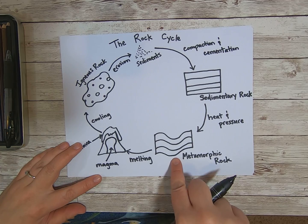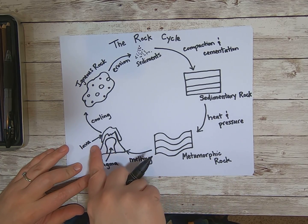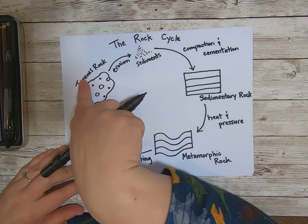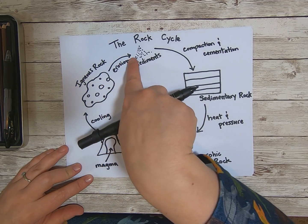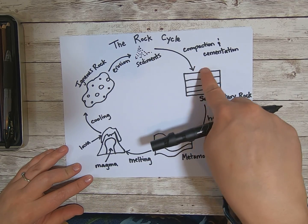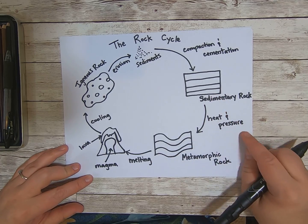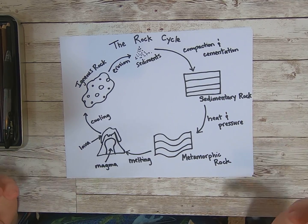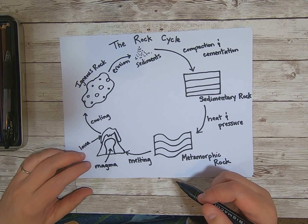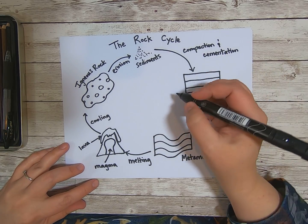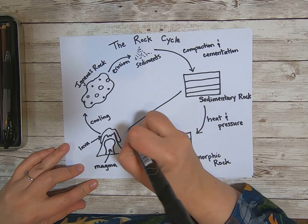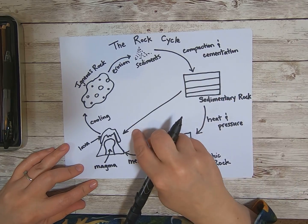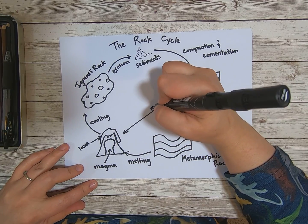Here's my rock cycle. Sedimentary rock, it goes through heat and pressure, it becomes metamorphic. It goes through melting, it becomes magma and lava. It cools down, it becomes an igneous rock. It goes through erosion, it becomes sediment, and compacts and cementation back into a sedimentary rock. Now I have a couple more arrows to add, because my sedimentary rock, if it gets buried deep enough, it can jump right over here. It can melt.